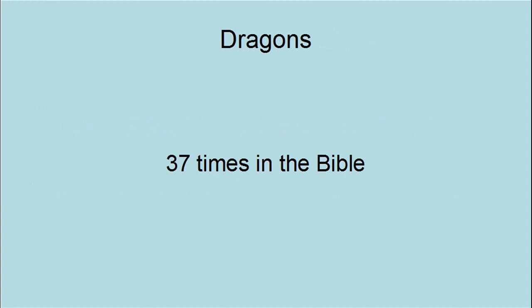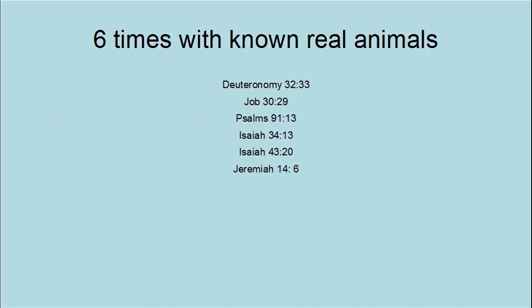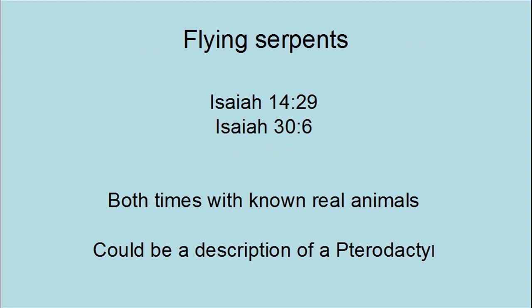Dragons are mentioned 37 times in the Bible. They are mentioned six times with known real animals in Deuteronomy 32:33, Job 30:29, Psalms 91:13, Isaiah 34:13, Isaiah 43:20, and Jeremiah 14:6. Isaiah 14:29 and Isaiah 30 refer to flying serpents, both times with known real animals — this could be a description of a pterodactyl.